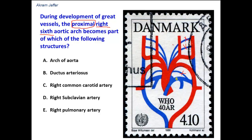Now let's go back to the options. Option A: is it the arch of the aorta? No. The ascending aorta and pulmonary trunk are derived from the truncus arteriosus. The proximal part of the arch of the aorta, up to the level of the left common carotid artery, plus the brachiocephalic trunk, is derived from the aortic sac. The remaining part of the arch of the aorta is derived from the left 4th aortic arch together with the left dorsal aorta. So it is not the arch of the aorta.